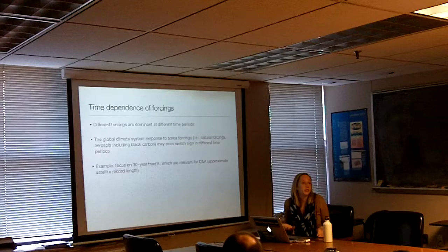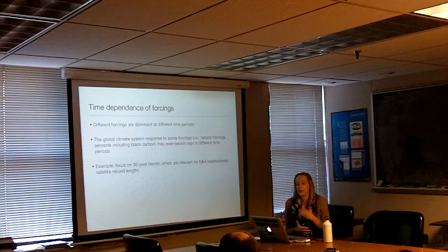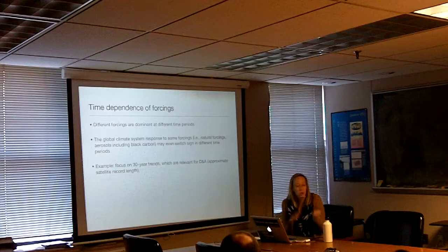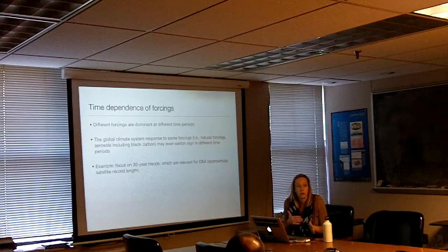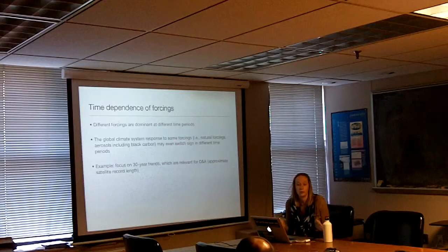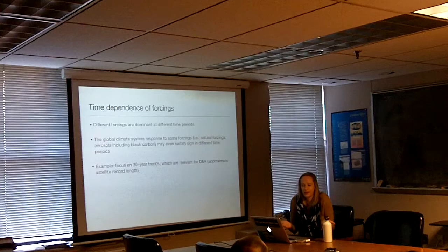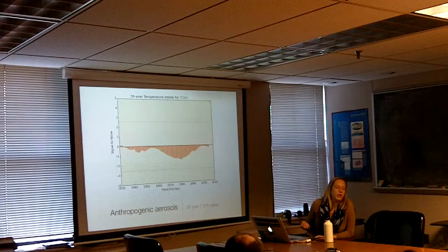Different forcings are dominant at different time periods. The global climate system responds to some forcings — like natural forcings when a volcano goes off, or aerosols when you have changes in the composition of aerosol emissions — which can even switch signs in different time periods. To look at which forcings are dominant at which times, I want to focus on 30-year trends, which are relevant for me as a detection-attribution person because that's the approximate length of the satellite record.